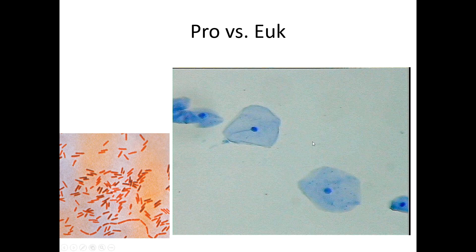Eukaryotic cells, on the other hand, are much larger. They do have membrane-bound structures inside of them, including a visible nucleus. There are other structures — rough ER, smooth ER, Golgi apparatus, mitochondria — that a standard light microscope can't see without special stains, but the nucleus usually stains with any kind of stain you use, so you would be able to see that present inside the cell.